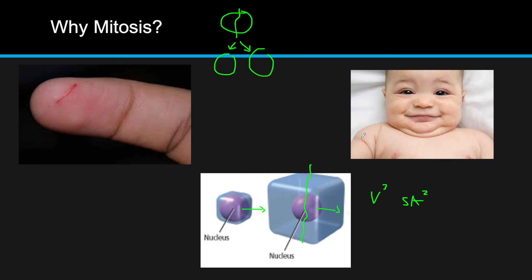On a larger scale, organisms need the ability to grow. Take a human — we need cell division to create more copies of cells in order to grow. As we get older our cells don't live forever — they die. So once those cells die, we need mitosis to replace them. And we need mitosis to repair damage, such as damage to skin, damage to organs, or damage to any part of the body.